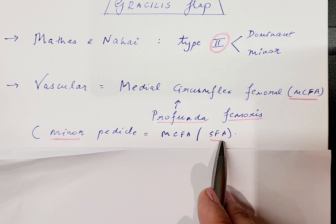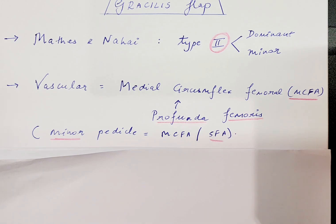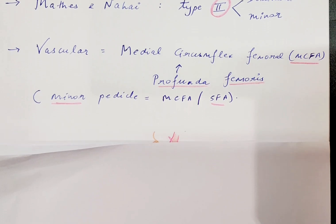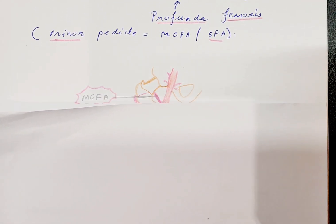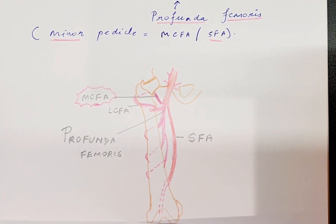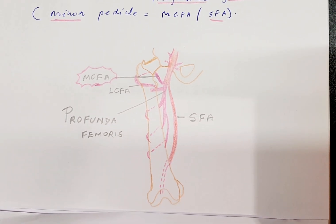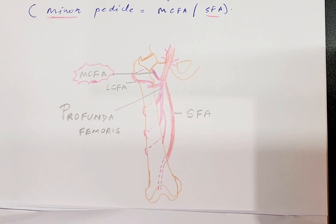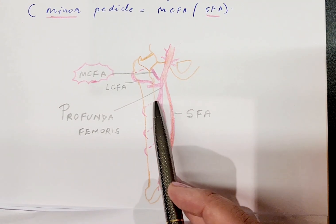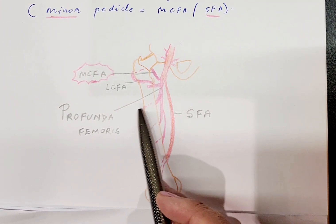To understand the vascularity in more detail, we will quickly revise the femoral artery, its origin, and its divisions. The femoral artery, which is a continuation of the external iliac artery, after crossing the inguinal ligament is going to divide mainly into the profunda femoris and the superficial femoral artery.